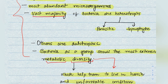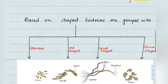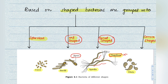Bacteria are classified into four groups on the basis of their shapes: cocci (spherical), bacilli (rod-shaped), spirilla (spiral-shaped), and vibrio (comma-shaped). Important note: spiral-shaped bacteria — spirilla — contain flagella, and rod-shaped bacteria — bacilli — contain spores.